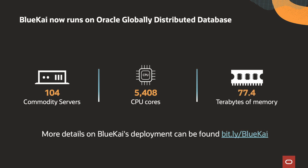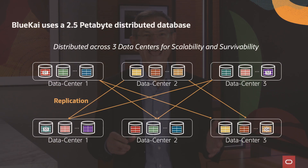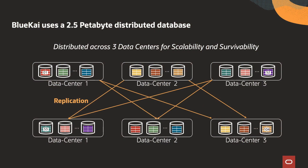It was migrated from a combination of Aerospike, Cassandra, and CeliaDB. The simplicity of this new architecture, plus the power of SQL, enables Blue Kai to innovate many times faster than before. Blue Kai runs on a 2.5 petabyte distributed database, distributed across three data centers for scalability and survivability.